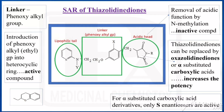This was the general structure of thiazolidinediones. It is having three parts: one is the head part, this one is the tail part, and these two are connected by means of a linkage — that can be called as a linker.